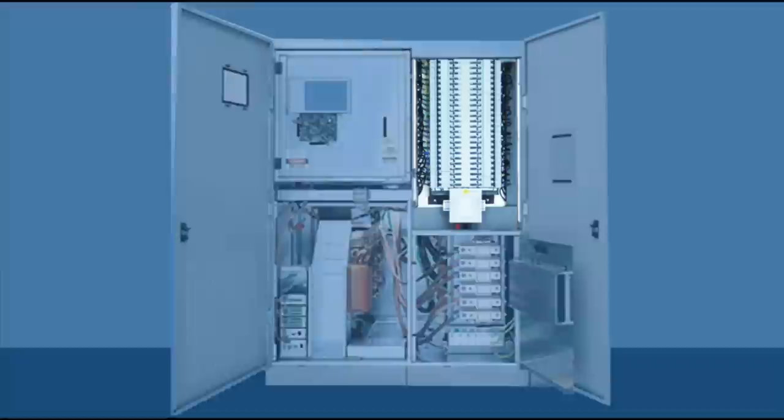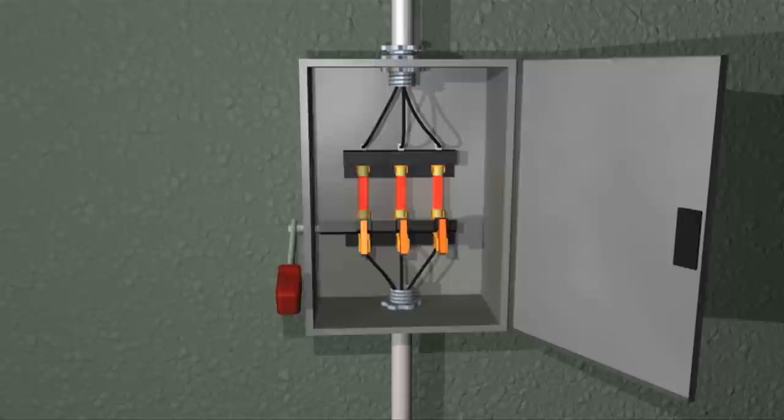Power distribution units, or PDUs, are found in data centers and computer rooms. Each of these units contains one or more circuit breaker panels and a transformer. They provide clean power to computer servers. A disconnect switch is nothing more than a switch designed for specific voltages and amperages. There are many different types and sizes. Some disconnects have fuses in them.